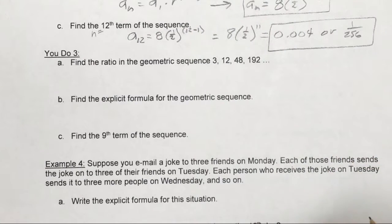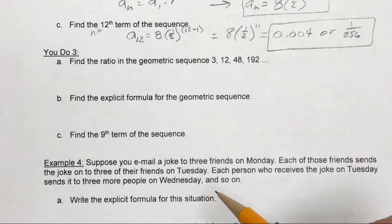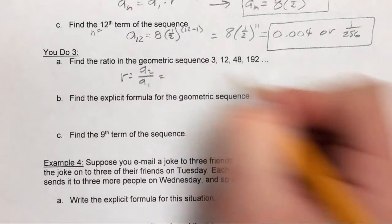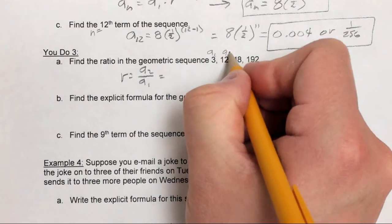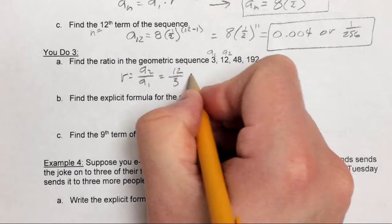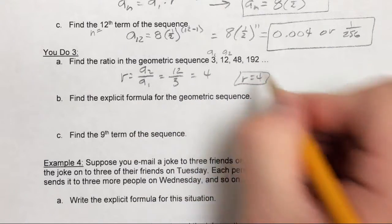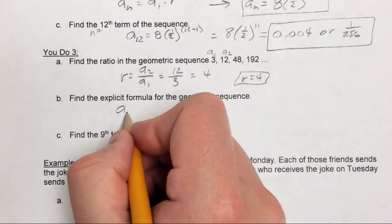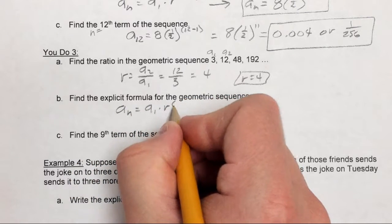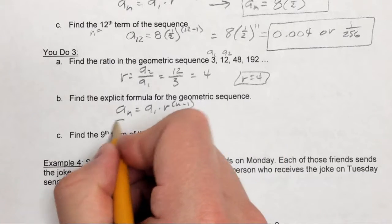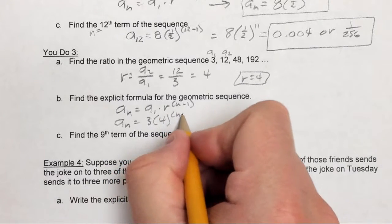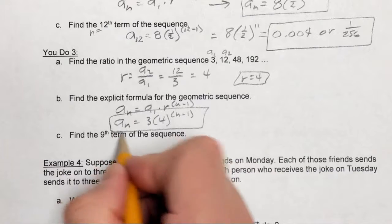Find the common ratio in the geometric sequence of 3, 12, 48, 192. Take the second term divided by the first term: 12 over 3 reduces to 4. So the common ratio is 4. To find the explicit formula, write a sub n equals a sub 1 times r to the n minus 1 power, where the first term is 3 and the common ratio is 4: a sub n equals 3 times 4 to the n minus 1 power. This is the explicit formula since only n's remain.